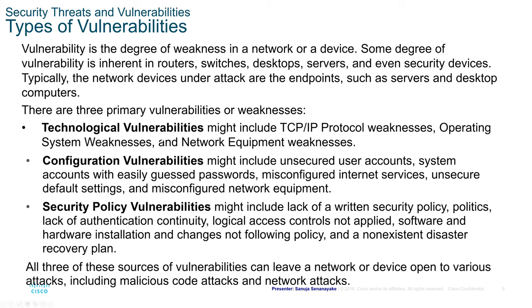Trust exploitation: a threat actor uses unauthorized privileges to gain access to a system, possibly compromising the target. Port redirection: a threat actor uses a compromised system as a base for attacks against other targets. For example, a threat actor uses SSH port 22 to connect to a compromised host A, and since host B trusts host A believing it has a secure connection, the threat actor can then use Telnet port 23 to access host B.